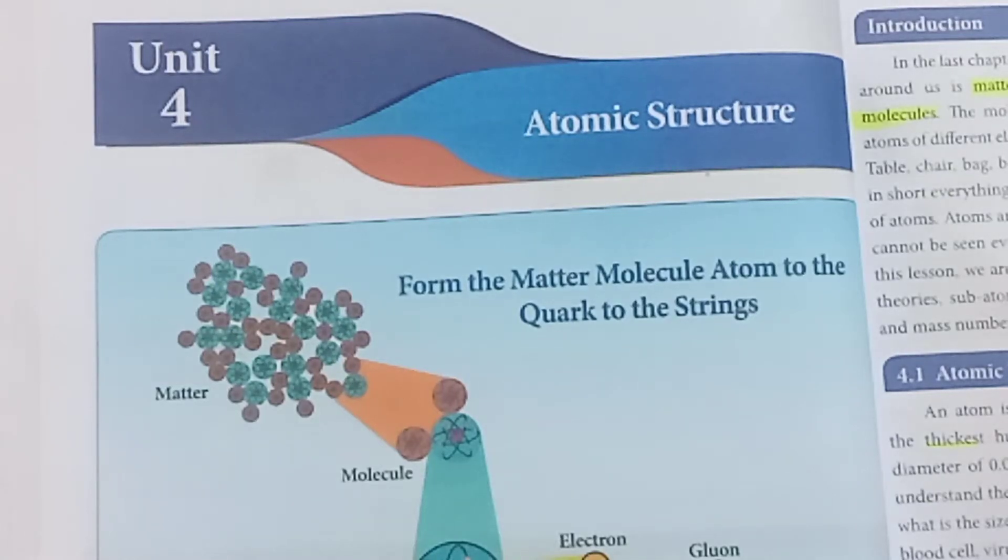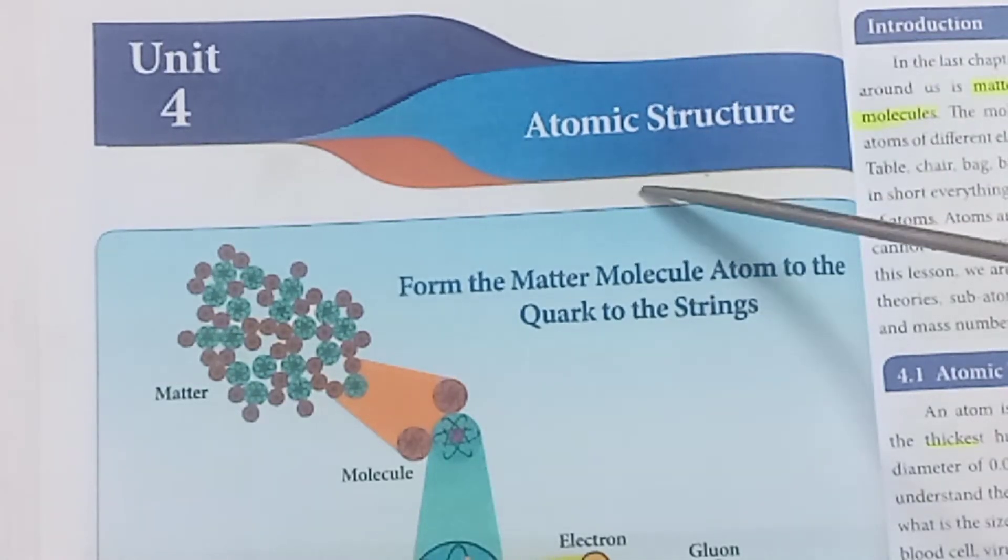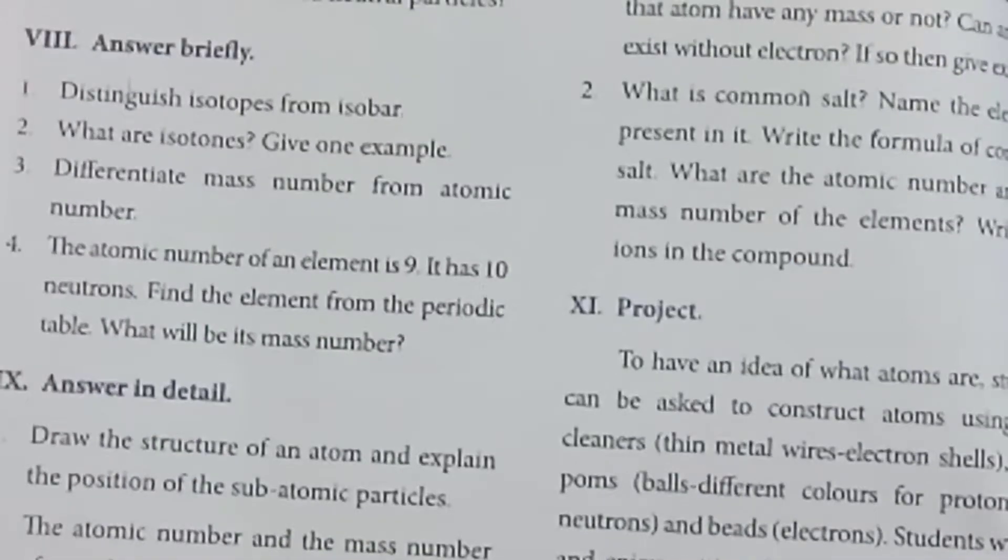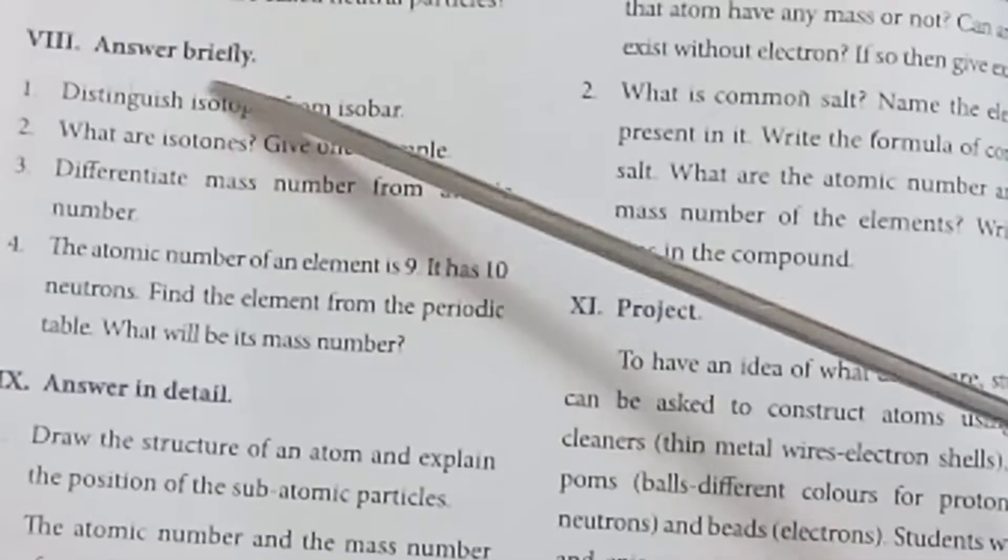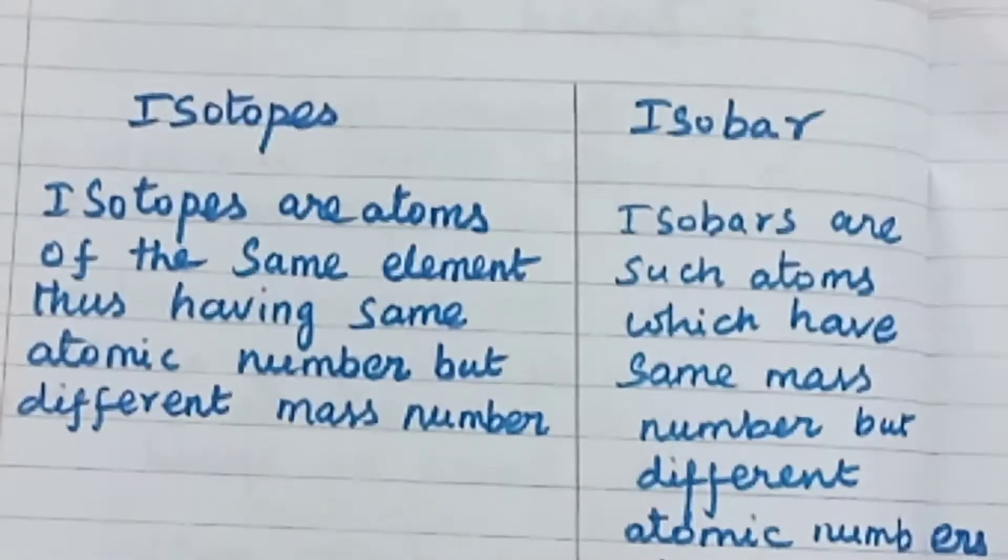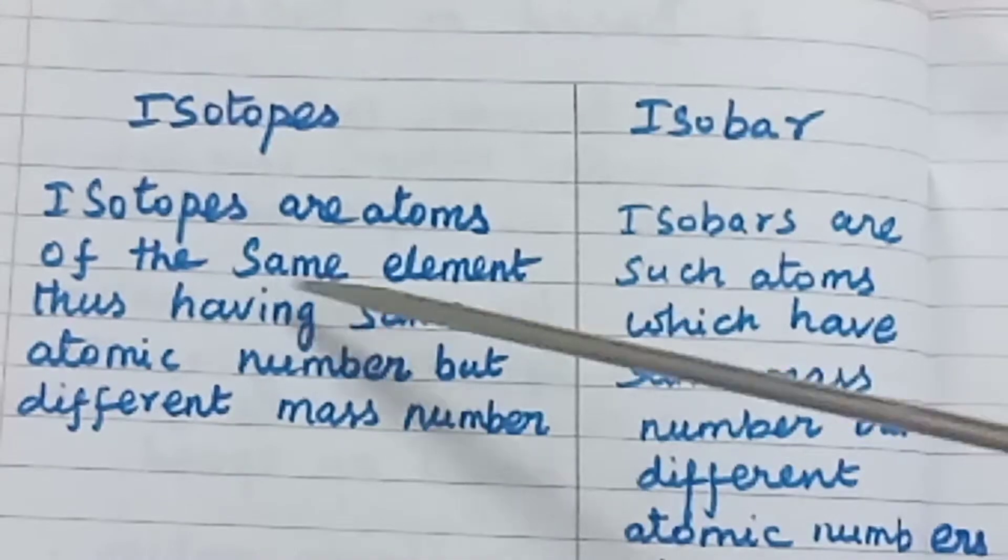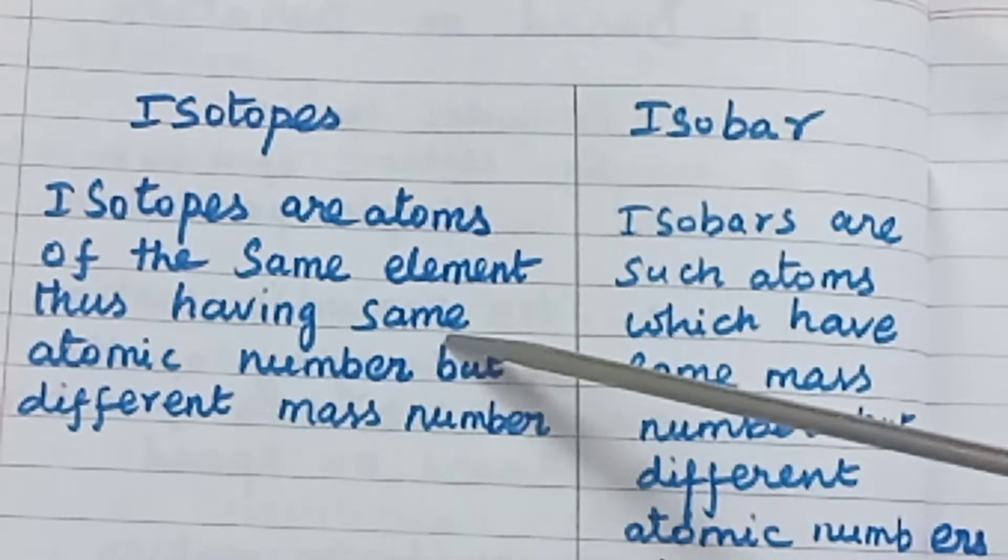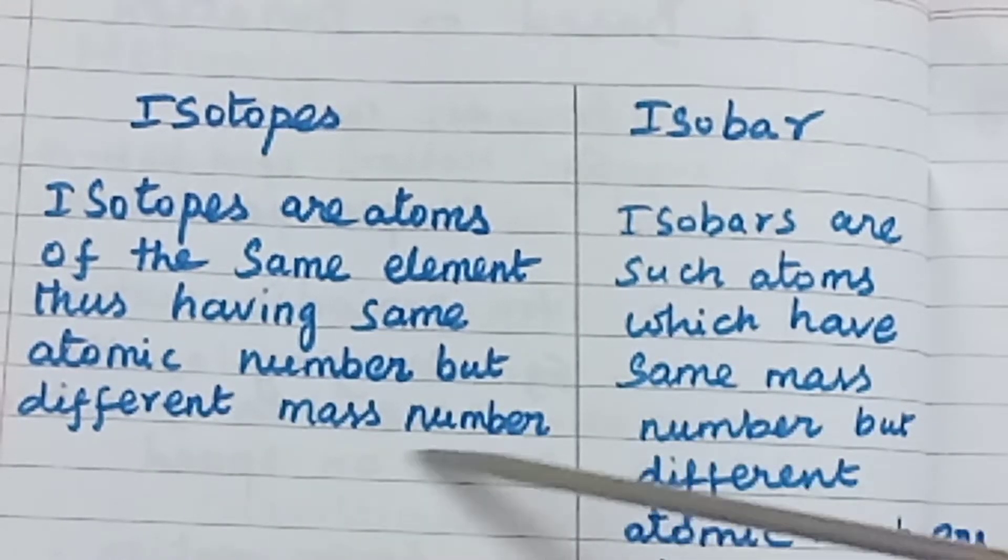Hello students, welcome to standard 7th science, unit 4, atomic structure, part 3 video. Question 8: Answer briefly - distinguish isotopes from isobars. Isotopes are atoms of the same element, thus having same atomic number but different mass number.